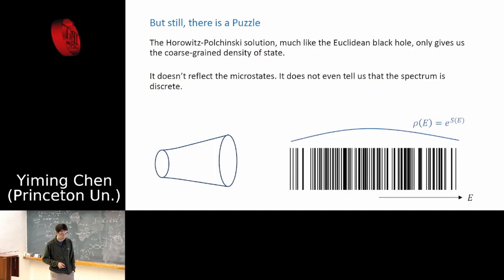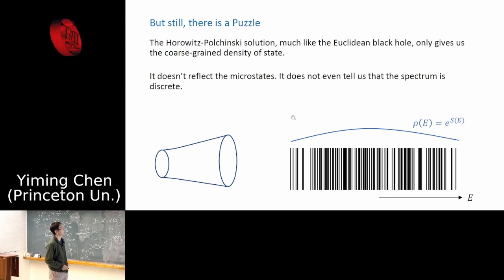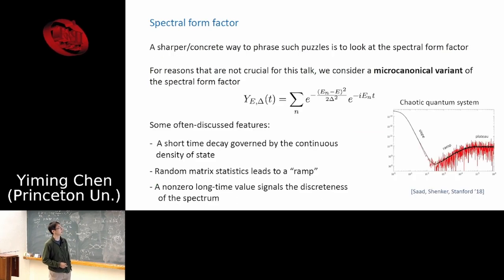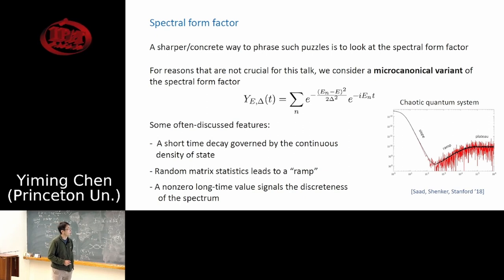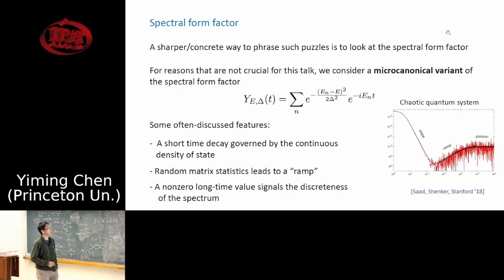Still, there is a puzzle. The Horowitz-Polchinski solution, much like the Euclidean black hole, only gives us a coarse-grained density of states — a smooth curve that doesn't reflect the microstates or the discreteness of the underlying spectrum. So what else do we need in this story to obtain a discrete spectrum? This will be the focus of the next part of the talk.